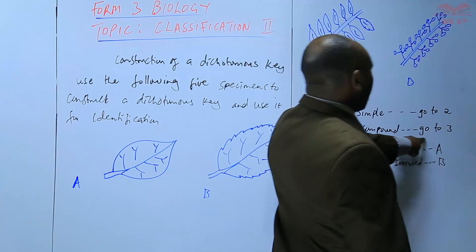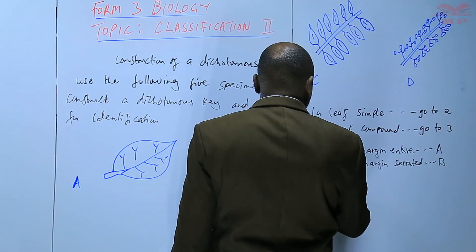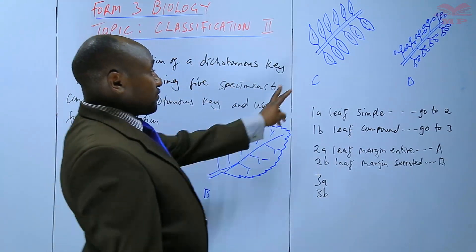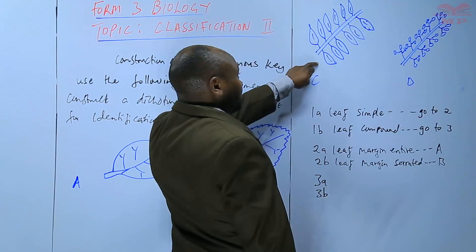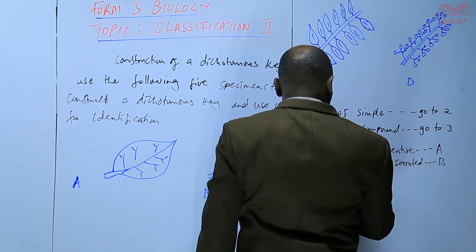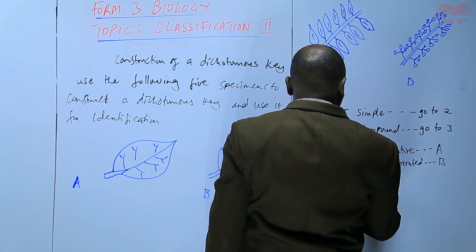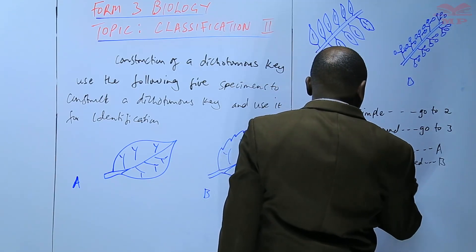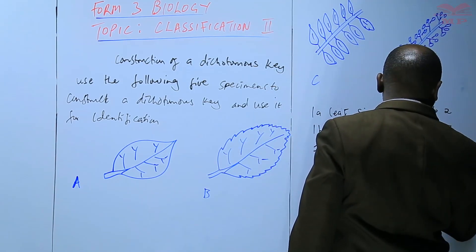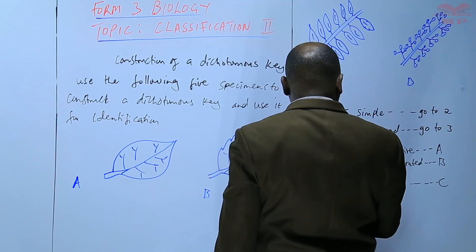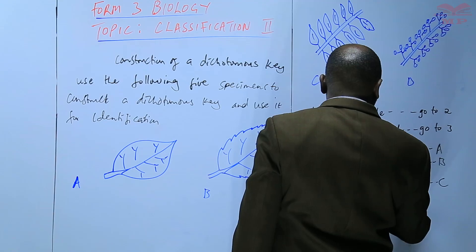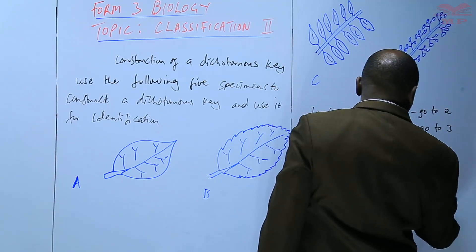We go to the step that told us to go to three. Every step must have two contrasting characteristics. Three A is for the compound, and we have this is a compound pinnate, and this is a compound bipinnate. Compound pinnate, and that is C, while B, D that is, is compound bipinnate, and that is D.